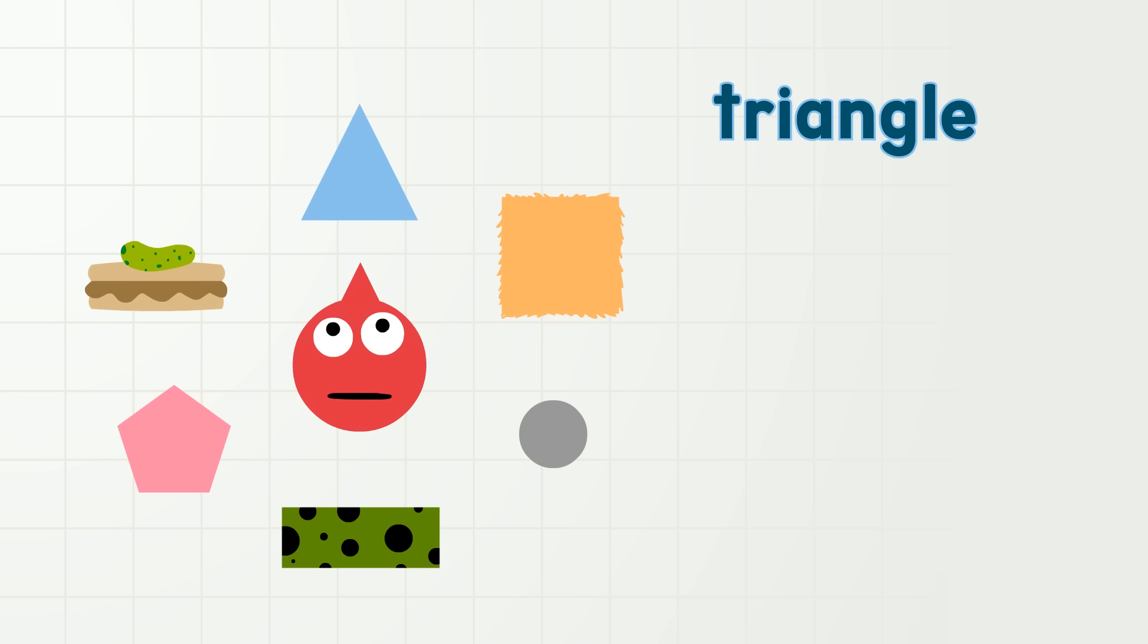For example, triangle has three sides. One, two, three. And is blue. Attributes!